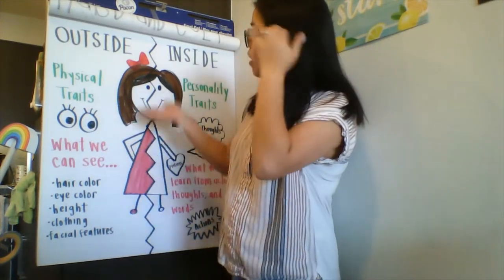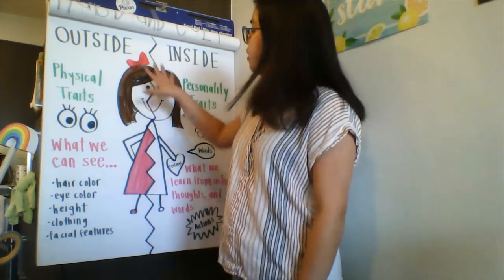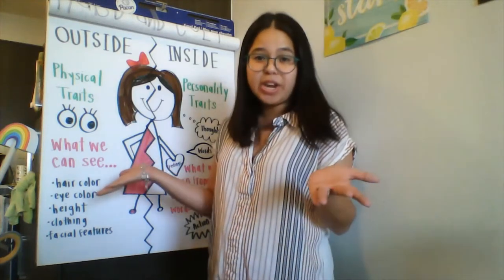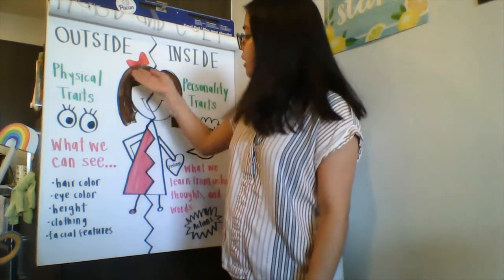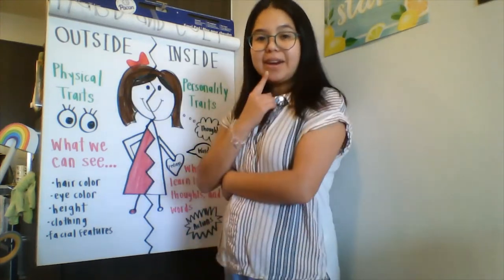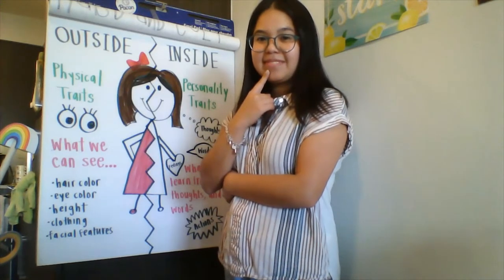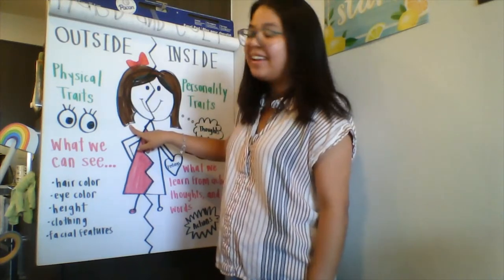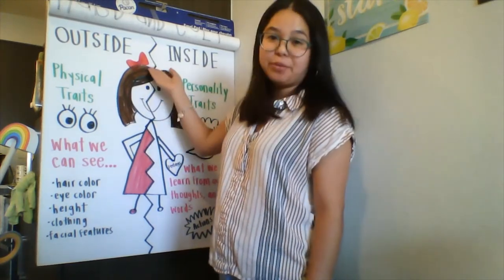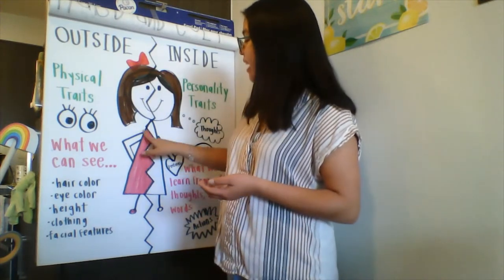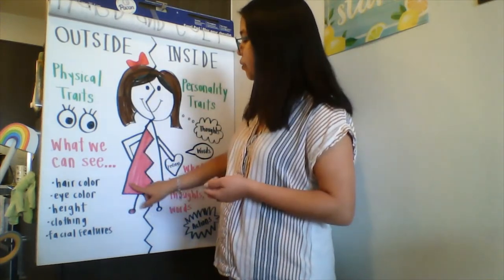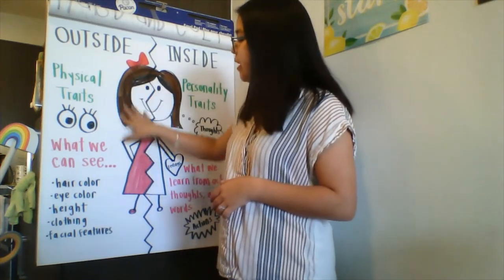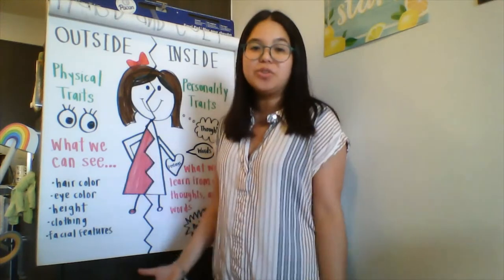And as you can tell, look at our girl here. What can you just tell from the outside? We can't see her inside and we don't know any words that she said, but what can we see from the outside? Think about it. I can see that she has brown hair. I can see that she has a red bow. I can see that she's wearing a pink dress and she has black eyes. Those are things that we can see with our eyes — physical outside traits.